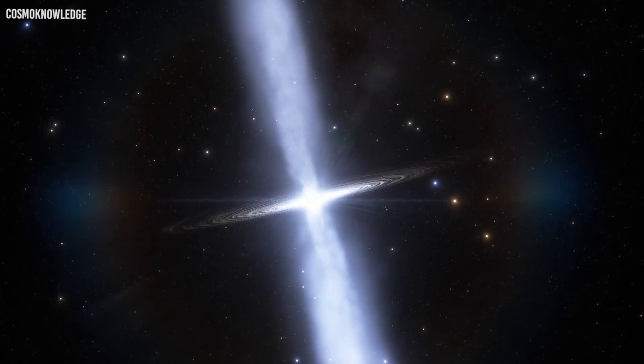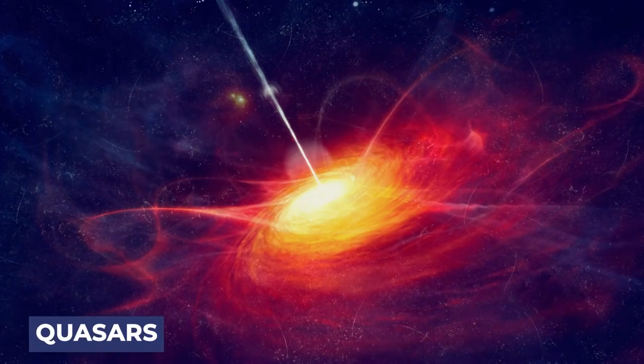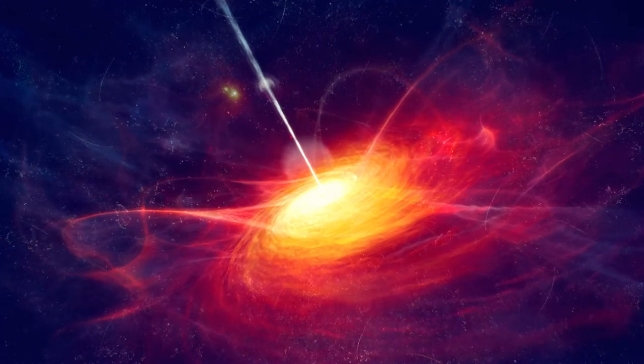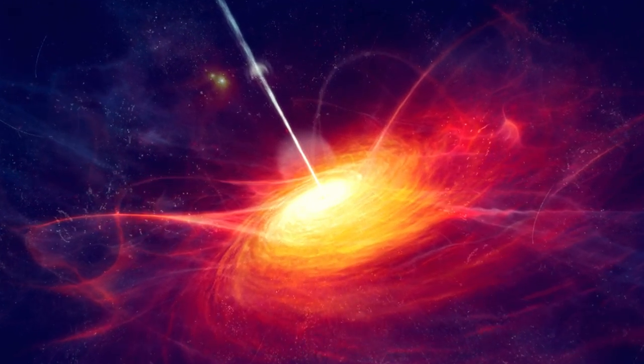TON 618 sits about 18.2 billion light-years away from Earth, and powers a quasar, one of the brightest objects in the universe, with the illuminating power of 140 trillion suns.